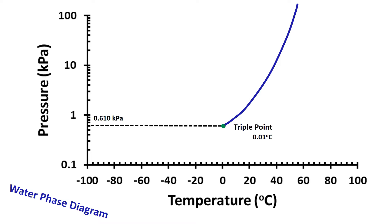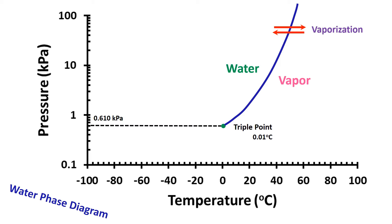Second is the water vapor line passing through the triple point. Water remains in a liquid state on the left side of the water vapor line, and on the right side water remains as vapor. As we cross the line on the phase diagram, liquid water transforms to water vapor and it is vaporization. Similarly, if we cross from the right side to the left side, then water vapor is condensed to the liquid phase and it is called condensation.